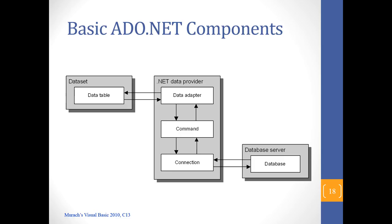Now let's look at how databases are connected to an application. This is ADO.NET — part of Microsoft's products. In order for a database like Access or SQL Server to work with a program, you need some type of connector. The program doesn't speak the database's language, so you need a translator in between — that's the middleman. ADO.NET plays that role. Java has a similar one called JDBC. These connectors allow you to connect to their systems.